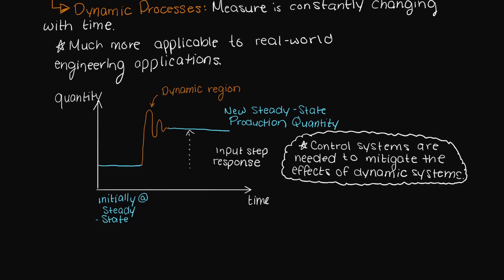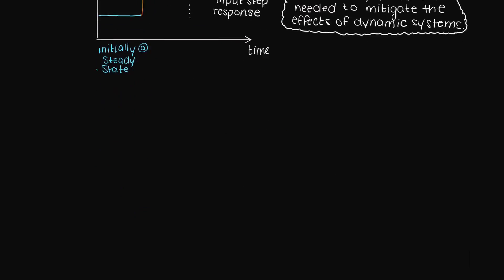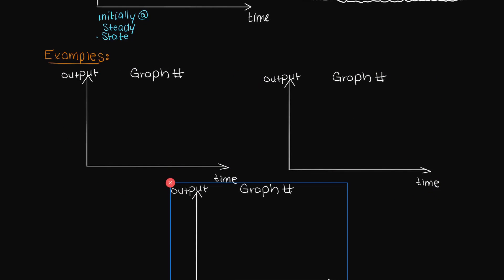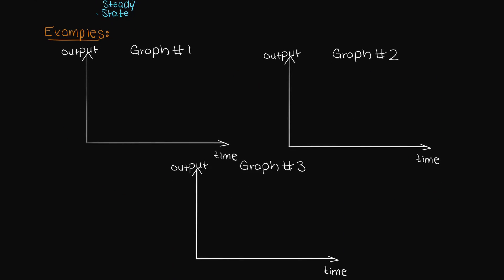Now that we have an understanding about the key differences between dynamic and steady state models, let's look at a few time-to-output graphs to make sure we really understand. Just take a second and pause the video, give yourself a try to figure these out on your own, and then come back and verify that you got the same answers as me.